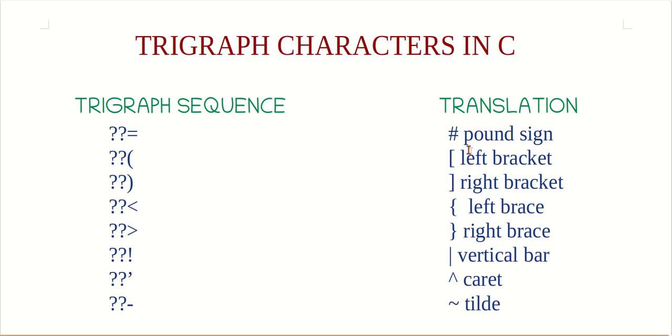So let's talk about these trigraph characters. Trigraph character consists of three characters: two question marks followed by another character. For example, if a keyboard doesn't support a pound sign, we can still use them in our program using trigraph. A pair of question marks followed by equals sign, like I have shown here, is equivalent to pound sign. And these are some of the trigraph characters.